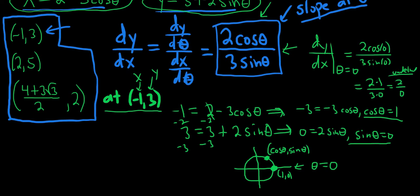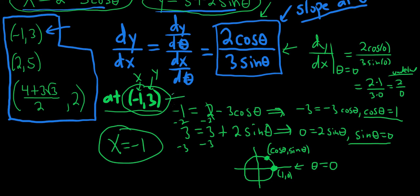An undefined slope means we have a vertical tangent line at this point. A vertical line passing through (-1, 3) must be x = -1. So whenever you have an undefined slope, you have a vertical tangent line, and the equation is simply x equals the x-coordinate of the point.